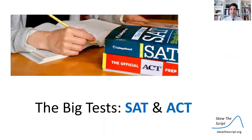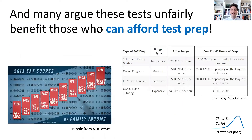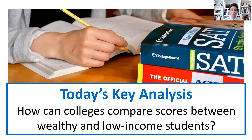So there are two big tests you can take to get into college: the SAT or the ACT. Some people argue these tests are fundamentally unfair — if you're from a wealthy background you can afford resources like hiring a private tutor or getting a test prep course, and those things can boost your score relative to students who may not be able to afford those resources. There might be ways that colleges can adjust for this. In today's key analysis we're going to look at how college campuses can compare scores using data between wealthy and low-income students.